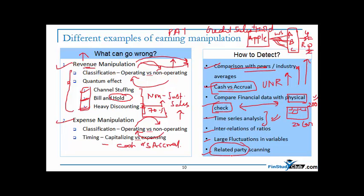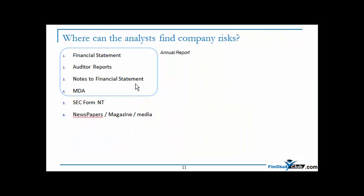Where can an analyst find risk-related information? The annual report is one of the biggest sources, including financial statements, auditor reports, notes to financial statements, and management discussion and analysis. These are all common-sensical readings that must be done to analyze a company qualitatively. Other sources include SEC forms, newspapers, magazines, media, and credit rating agencies. This concludes Reading 21. Reading 22 is equally interesting but will involve more calculation. This was Ankur from FinStudyClub - have a great exam!